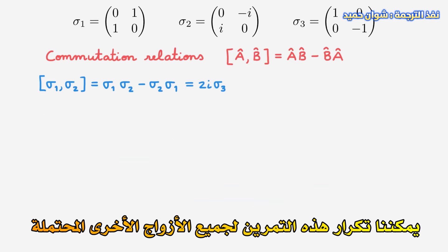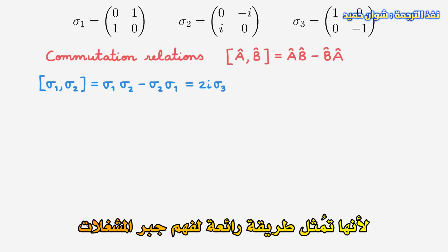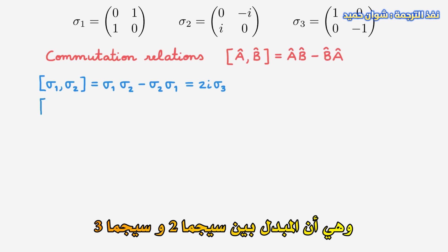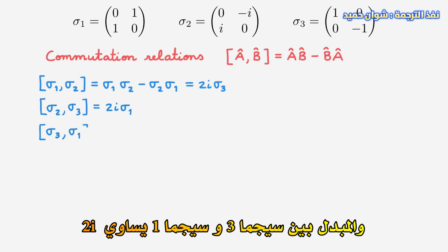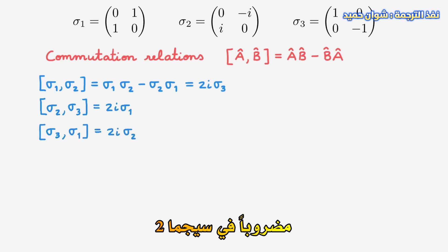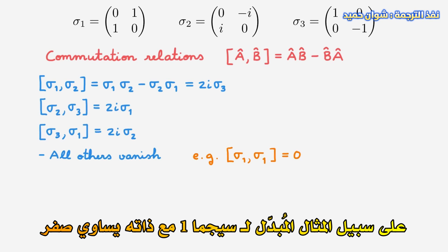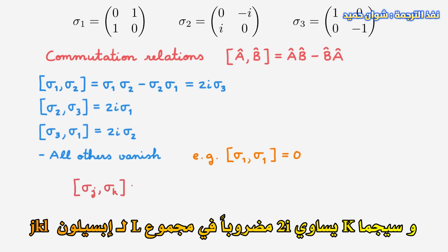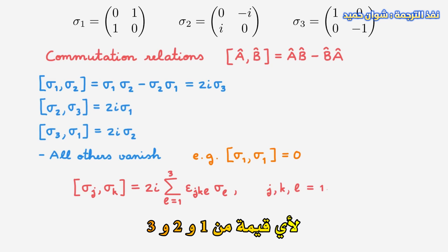We could repeat this exercise for all other possible pairs of Pauli matrices, and I encourage you to try it out because it's a great way to get familiar with operator algebra. The commutator between sigma-2 and sigma-3 is equal to 2i times sigma-1, and the commutator between sigma-3 and sigma-1 is equal to 2i times sigma-2. All other commutators will vanish trivially — for example, the commutator of sigma-1 with itself is equal to 0. We can summarize these expressions as the commutator of sigma-j and sigma-k being equal to 2i times the sum over L of epsilon-jkl times sigma-L, where j, k, and L can take any value of 1, 2, and 3.